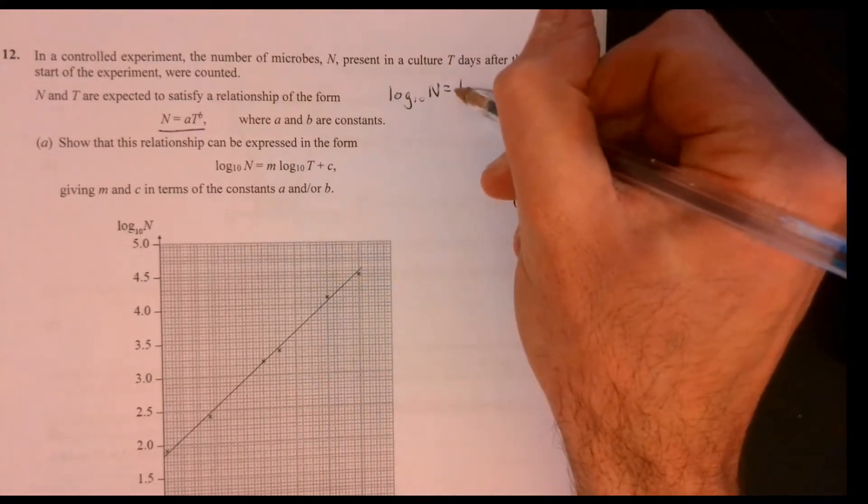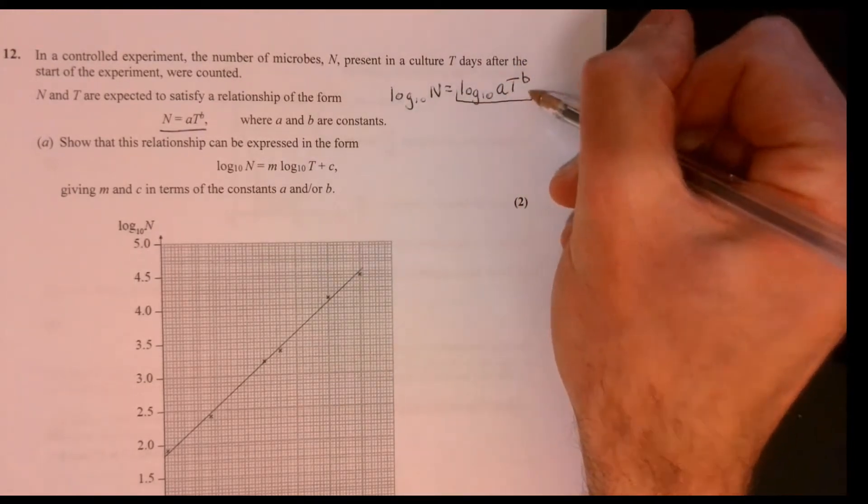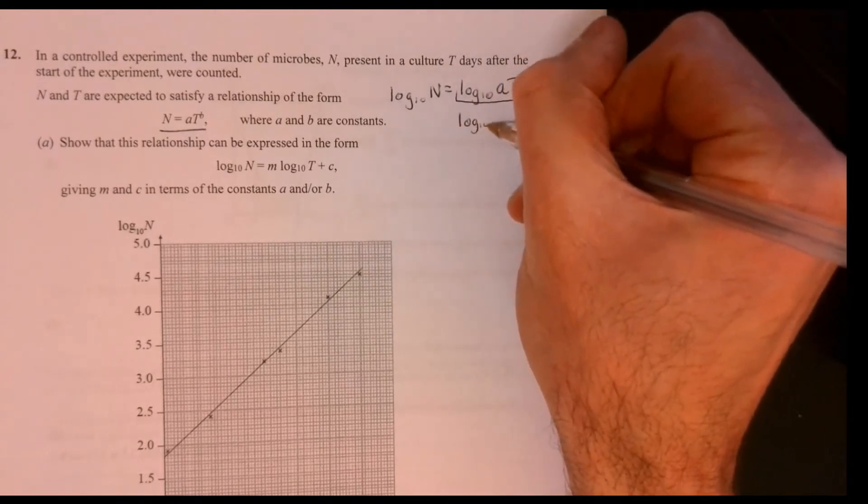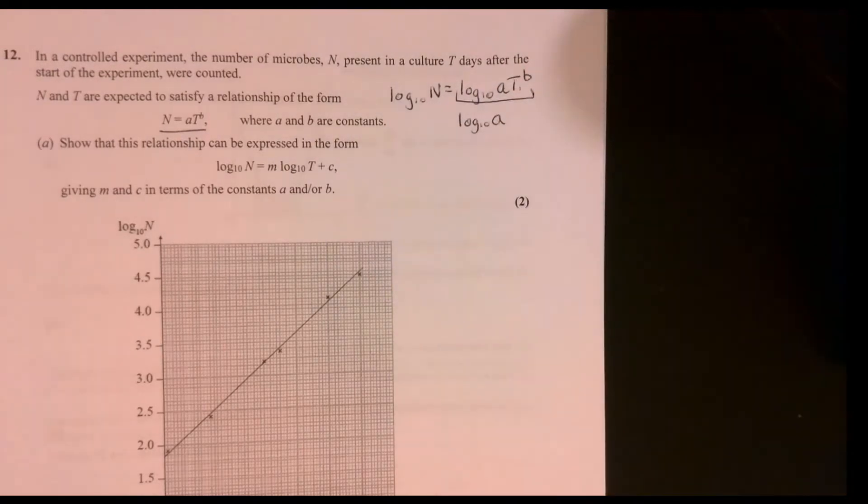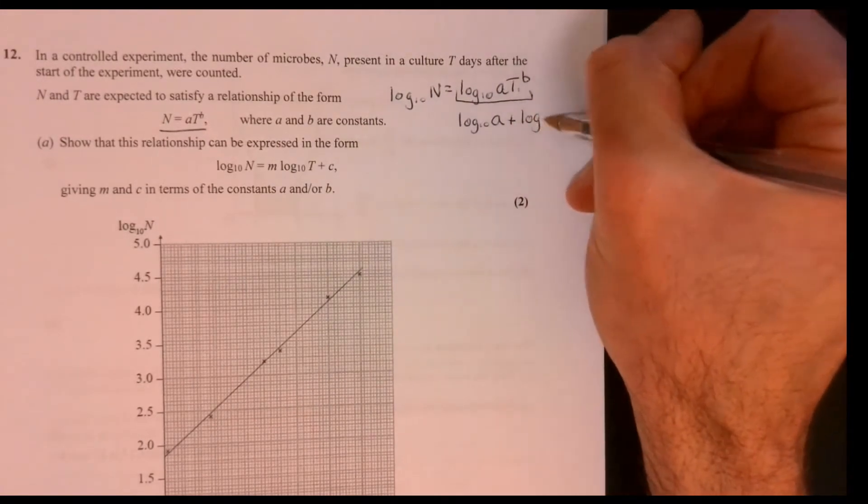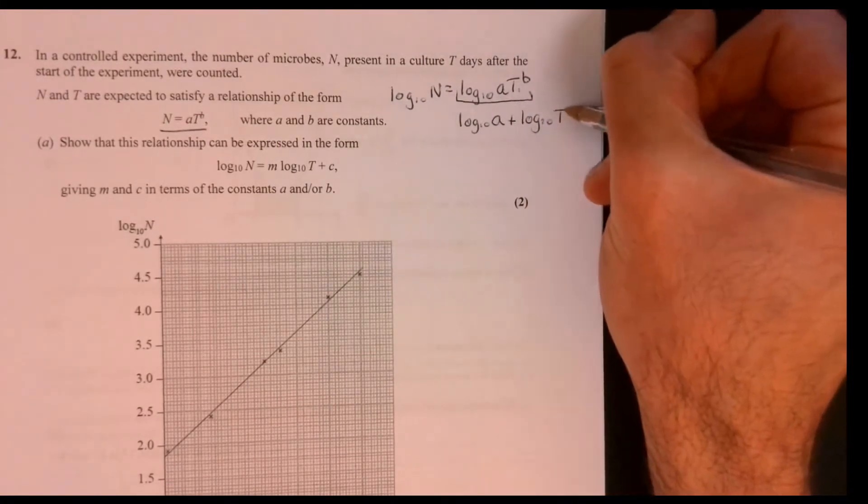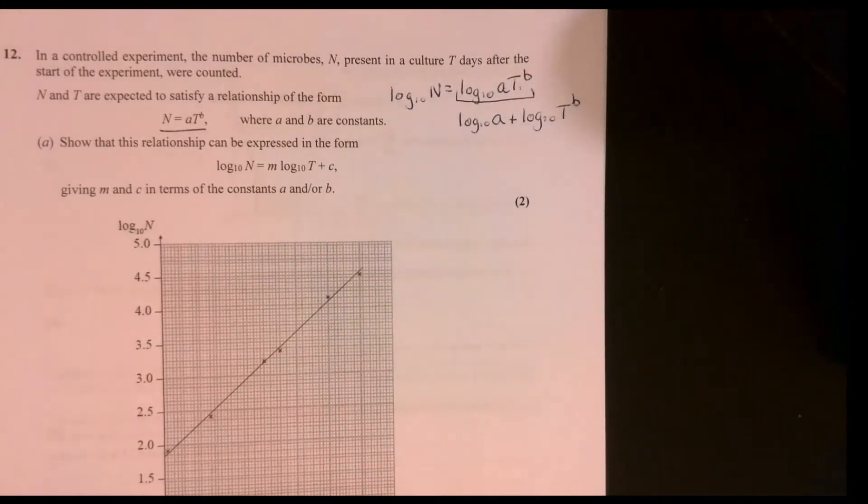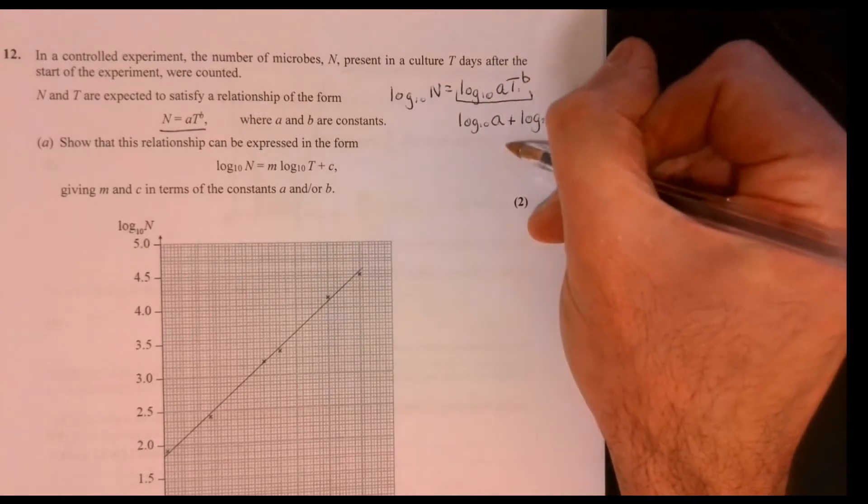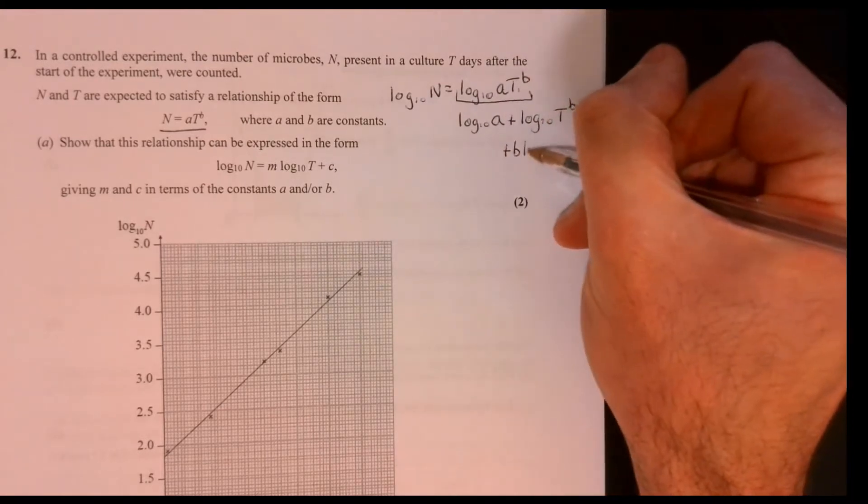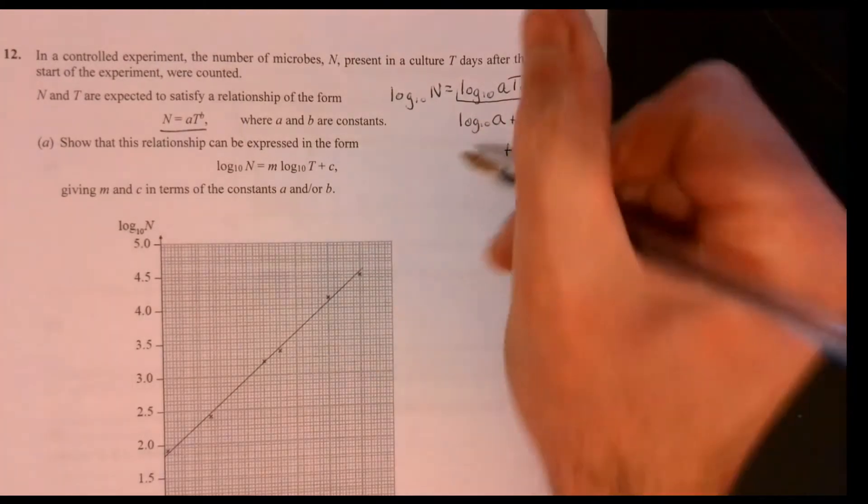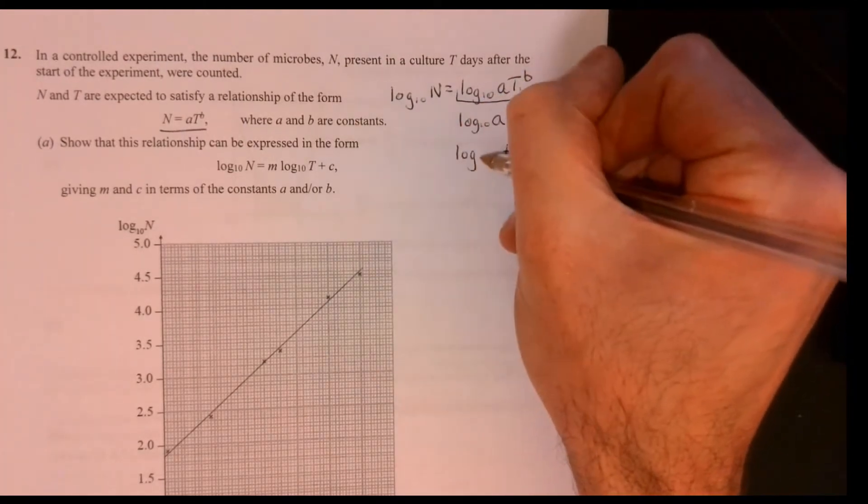Just think about your basic log laws. You've got two things multiplied together, so we can write this side and this, plus this part here. Now, when you've got a power, that comes to the front. So we're going to have it come down to this part, and then over here.